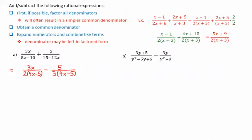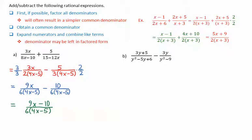For the first rational expression, we multiply by 3 over 3, and for the second, by 2 over 2. We then expand the numerators: for the first, 3 times 3x gives 9x, and for the second, 2 times 5 gives 10. Both over the common denominator. We then combine the two numerators — in this case there are no like terms — so we simply have 9x minus 10 over the common denominator of 6 times 4x minus 5.